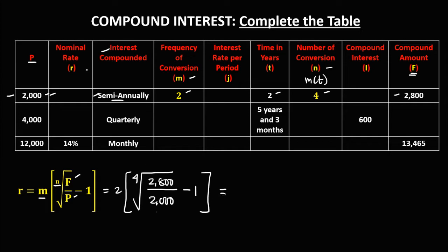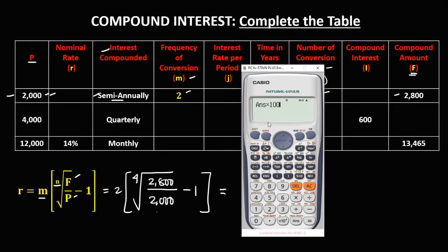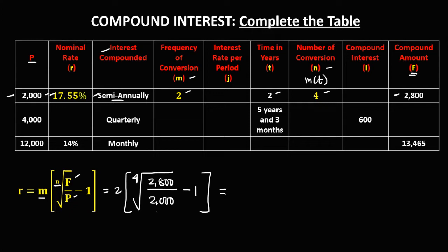To solve for the nominal rate using the calculator: take the 4th root, open parenthesis, 2,800 divided by 2,000, close parenthesis, equals, then minus 1, equals, then times 2, equals. We get 0.1755. To convert to percent, multiply by 100, giving us 17.55%. Therefore the nominal rate is 17.55%.